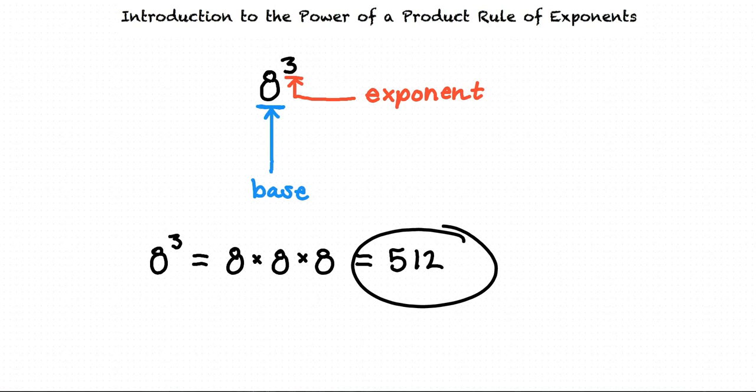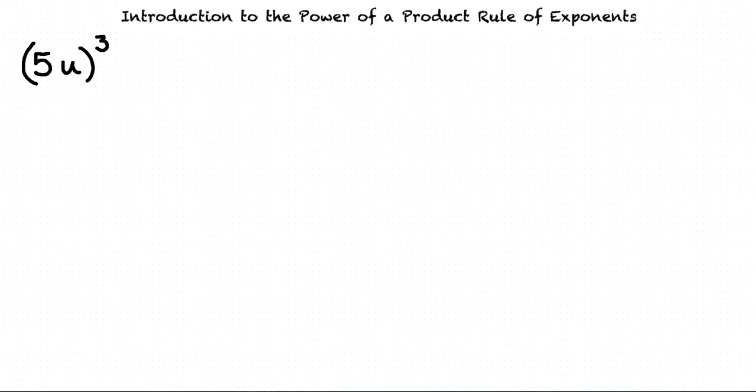Let's take a look at what we do if we have two factors multiplied together and everything is raised to a power, like this. 5u all raised to the third power.